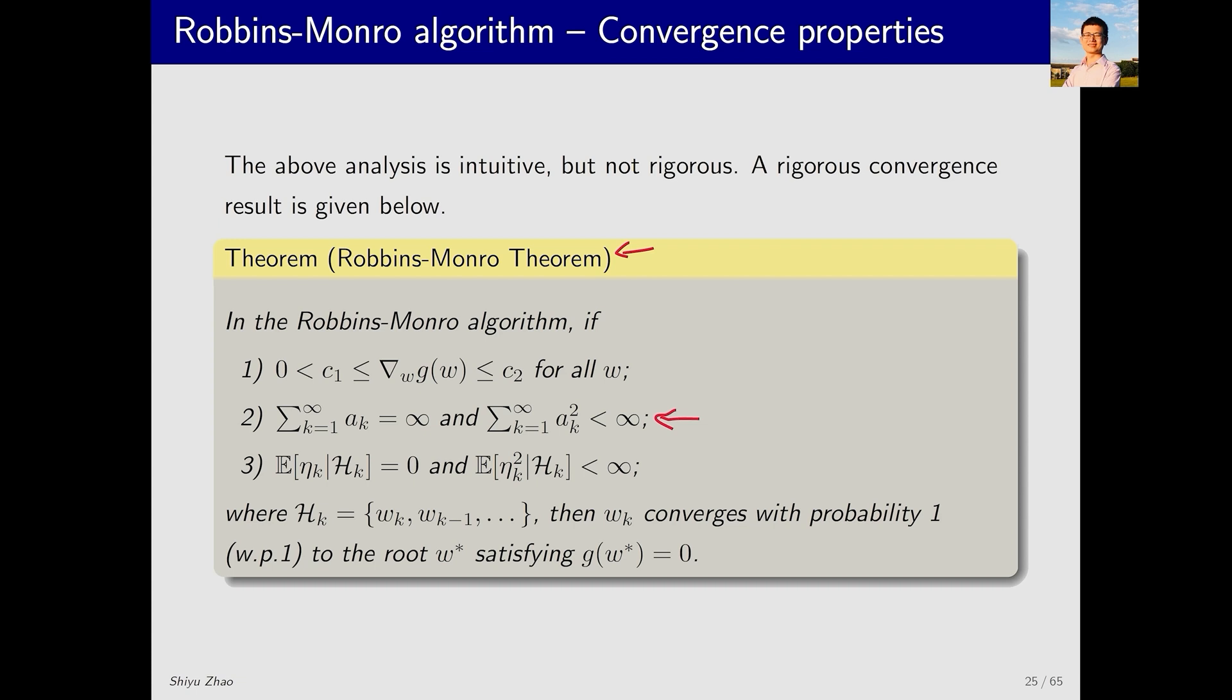The theorem states that under these conditions, the RM algorithm ensures that w_k will converge to w star, where w star is the solution to g(w) equals zero. When we talk about convergence in this context, we refer to it as with probability one, abbreviated as WP1.